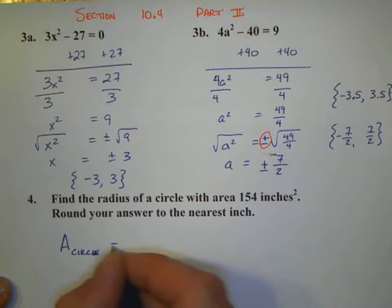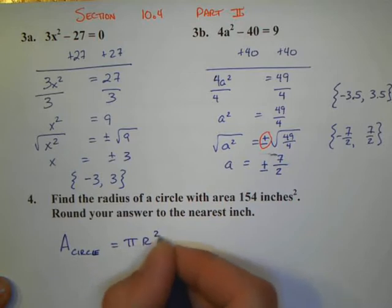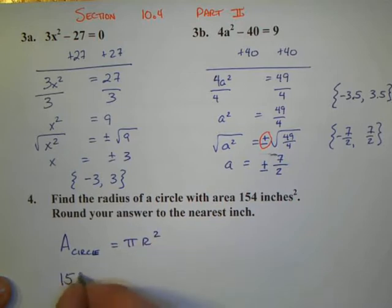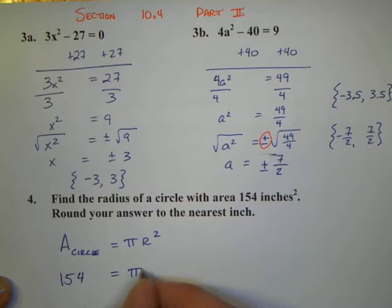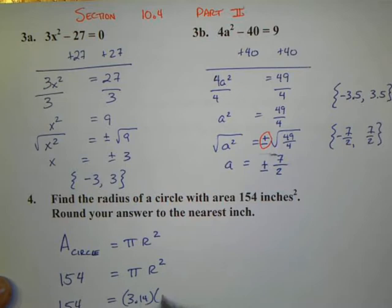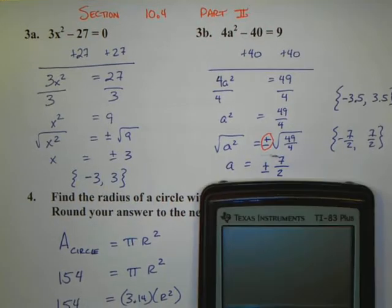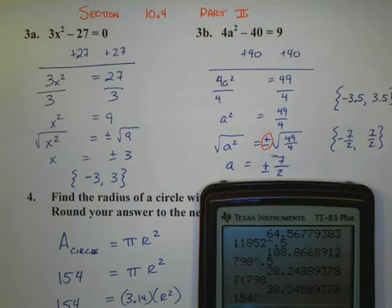We're supposed to find the radius of a circle with an area of 154 inches squared. Well, let's use the area formula for a circle. The area formula for a circle, remember, is pi r squared. So we replace the area with 154, and we use pi r squared. Well, now I'm going to use an approximation for pi of 3.14.